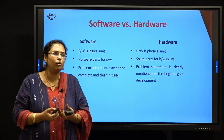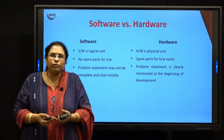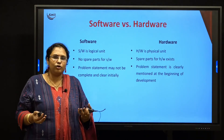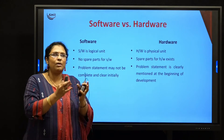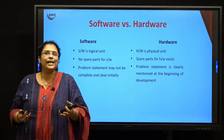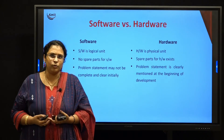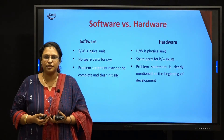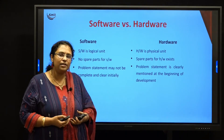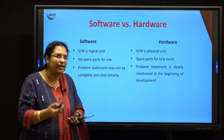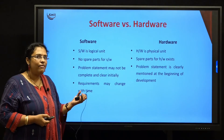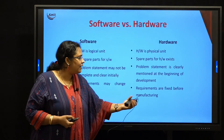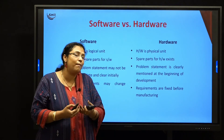Whereas in hardware, the problem statement should be very clearly given at the time of manufacturing only. For example, if you have placed an order for 10 buckets at a factory, the shape and color of the bucket are already fixed. Once a bucket is manufactured, you cannot change its shape and color. So in hardware development, the problem statement must be clear from the beginning. This leads to the next point: in software, the requirements may change with time, whereas in hardware, the requirements are fixed before manufacturing only.